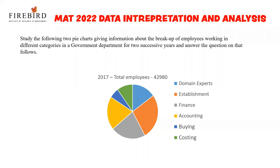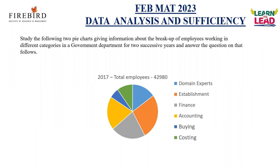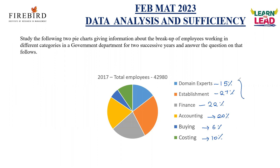This is a question based on the Feb MAT 2023 question paper. Study the following two pie charts giving information about the breakup of employees working in different categories in a government department for two successive years and answer the questions. In 2017, the total employees at the company are 42,980. These employees are working in different tasks: domain experts 15%, establishment 27%, finance 22%, accounting 20%, buying 6%, and costing 10%.